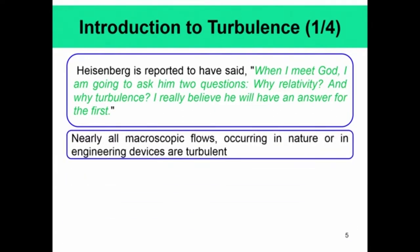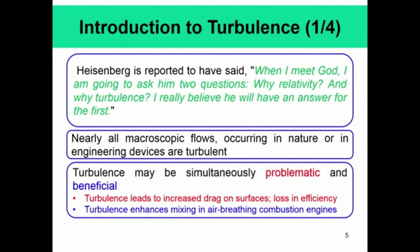All macroscopic flows occurring in nature and engineering devices are turbulent, and turbulence may be simultaneously problematic and beneficial. For example, turbulence leads to increased drag on surfaces and loss in efficiency, but by the same reason it also produces higher heat transfer rates. In an engine, turbulence enhances mixing in air-breathing combustion engines — which is very important, because after you inject the fuel, if it is not already in a premixed state, you need quick mixing so that combustion can happen.